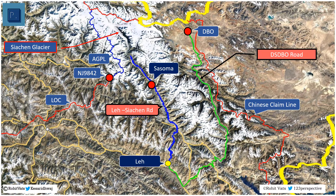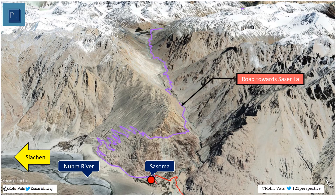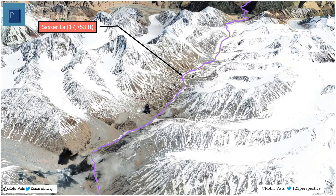To give depth to the road connecting with DBO, BRO is developing a new road which will start from Sasoma, go over the Saser La pass, and then connect with the DS-DBO road at Margo. A road connecting Leh with the Siachen base camp already exists. Sasoma lies about 40 km before the Siachen base camp. From Sasoma, the road turns east and ascends the Karakoram range. The Saser La pass is about 50 km from Sasoma and is located at an altitude of 17,753 feet.